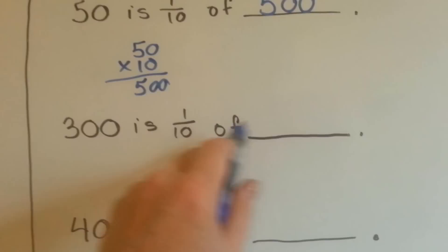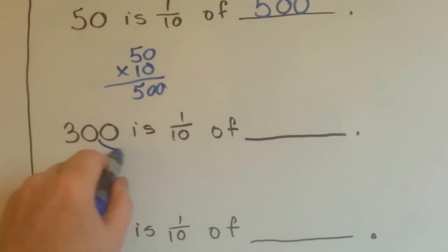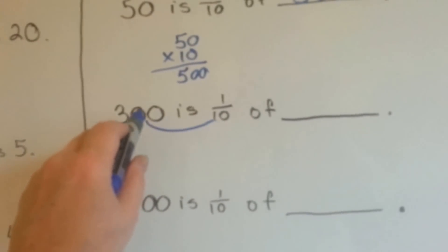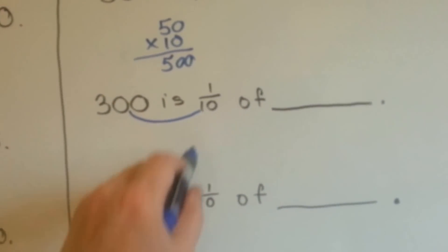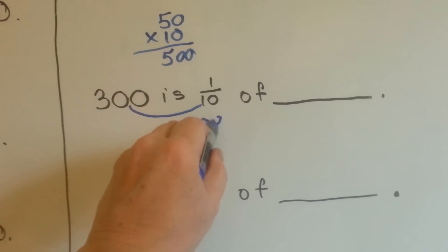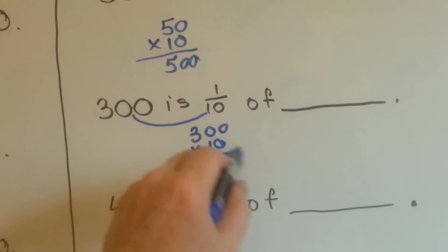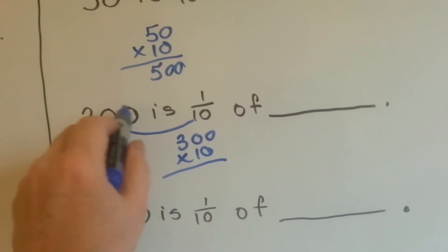300 is 1 tenth of what number? Just like we did, the 2 is 1 third of 6 down here. We're going to multiply the 300 times the 10. 300 times 10 is a 3 with 3 zeros. See? 1, 2, 3.